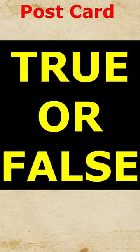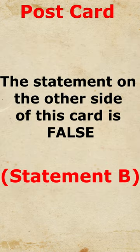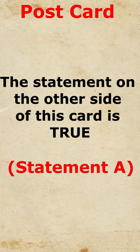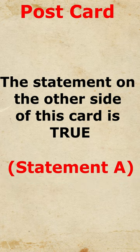Attempting to attribute truth or falsehood to either statement A or B leads to a perplexing paradox. If statement A is considered true, then statement B must also be true. Conversely, for statement B to be true, statement A has to be false.